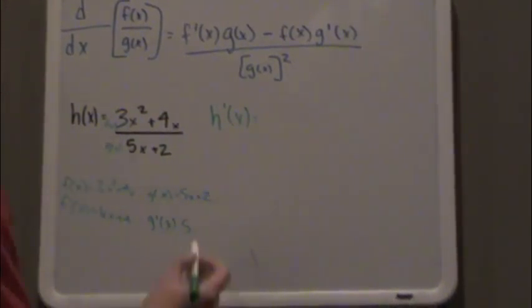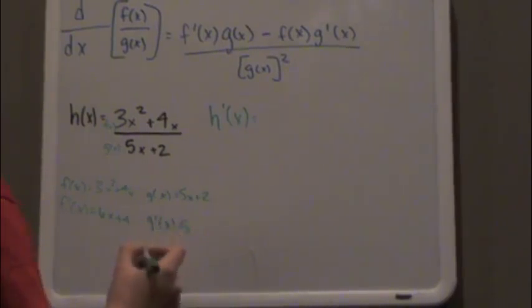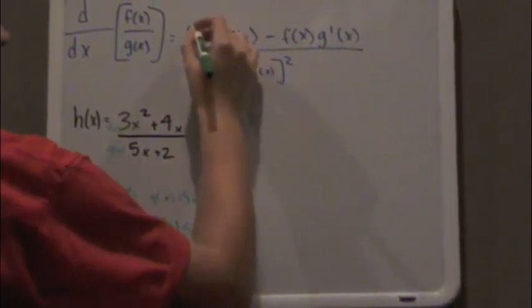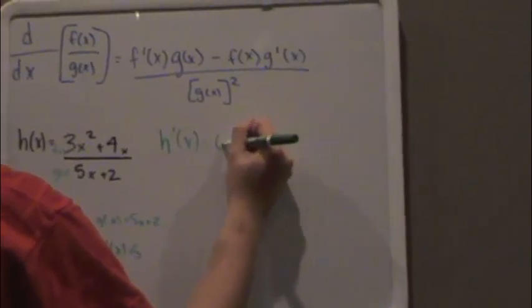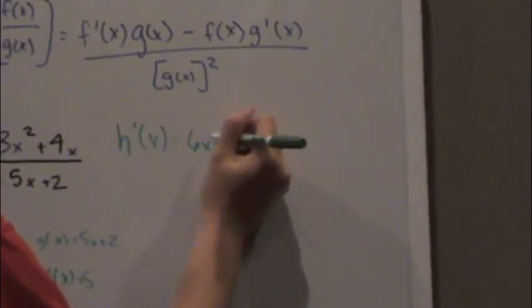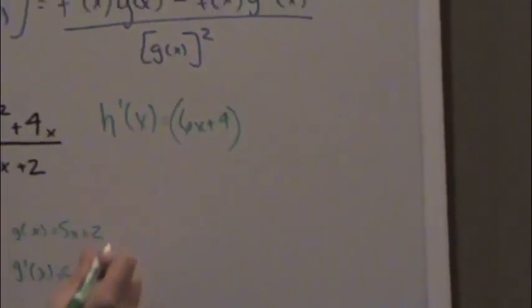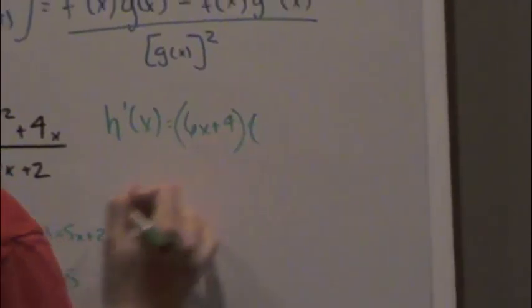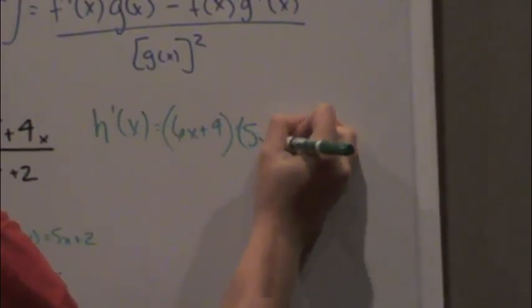Alright, so let's plug that into this equation. So f prime of x equals 6x plus 4 multiplied by the denominator, g of x equals 5x plus 2.